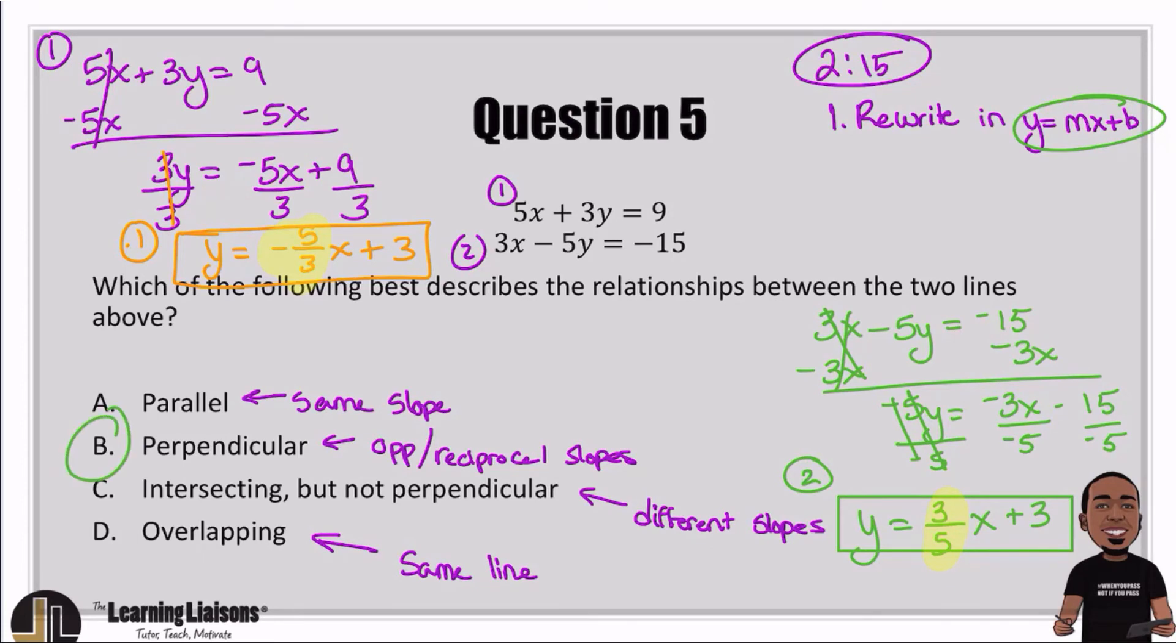If they have the same slope, they would be parallel, which is definitely not the case. If they had the same slope and same y-intercept, they would be overlapping, which is not the case. And it's not C because they do intersect, but they intersect at a 90 degree angle because they have opposite signs. So this is positive, and then they're flipped. They're reciprocals. That is the definition of perpendicular.